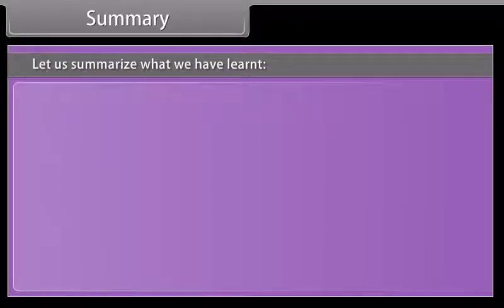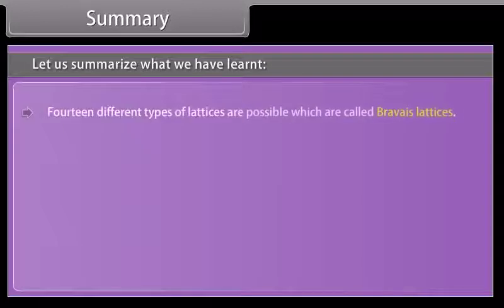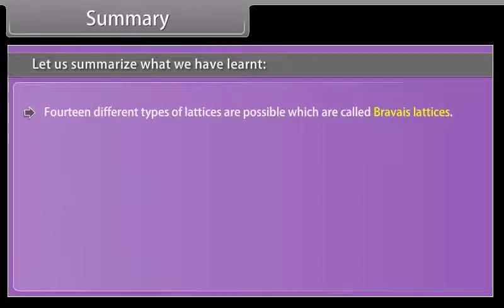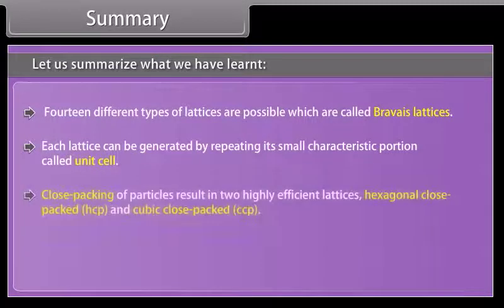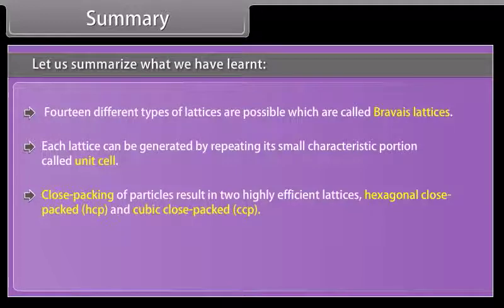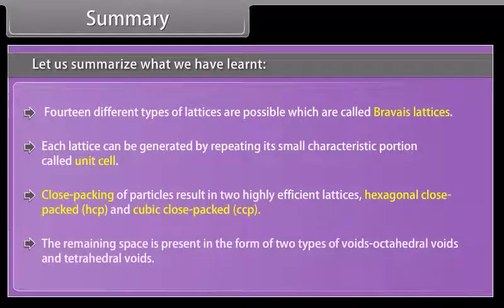Summary: 14 different types of lattices are possible, which are called Bravais lattices. Each lattice can be generated by repeating its small characteristic portion called a unit cell. Close packing of particles results in two highly efficient lattices: hexagonal close-packed (HCP) and cubic close-packed (CCP). The remaining space is present in the form of two types of voids: octahedral voids and tetrahedral voids.